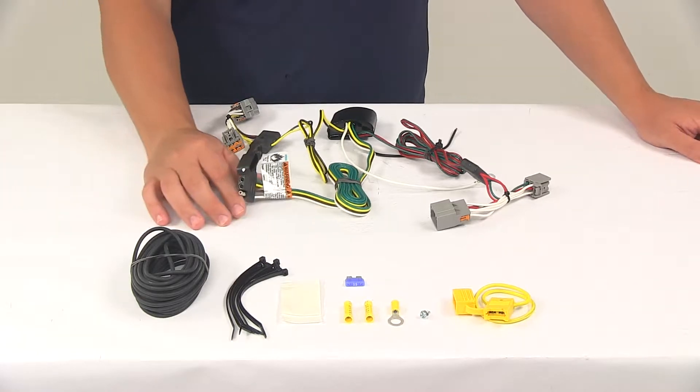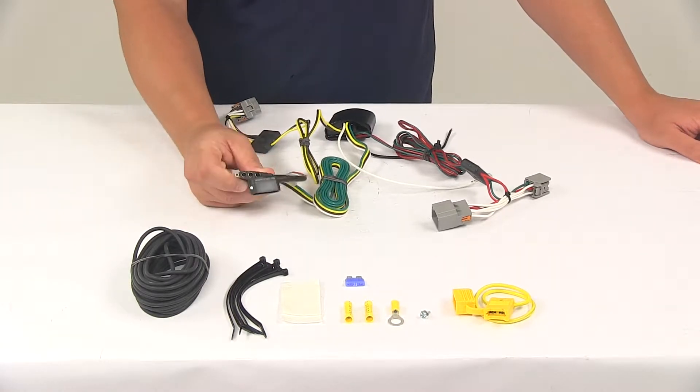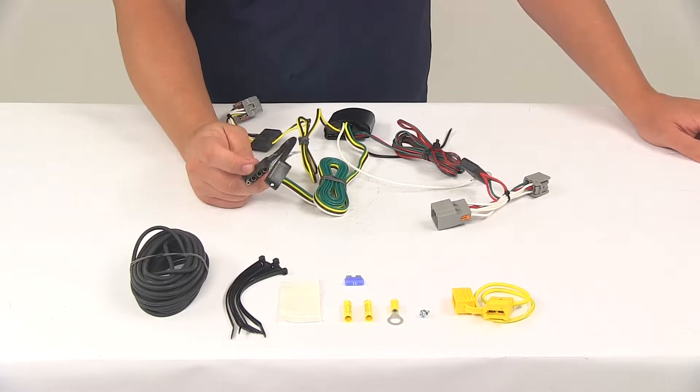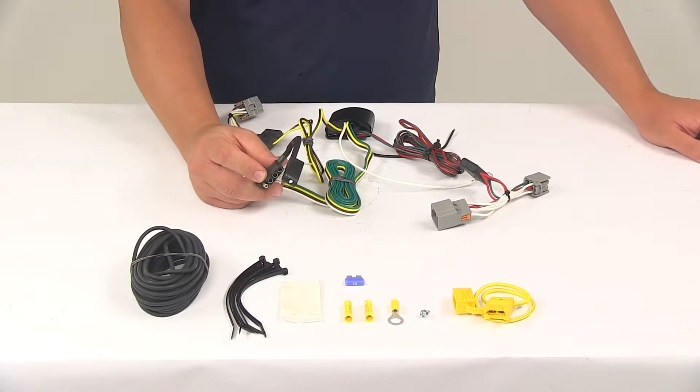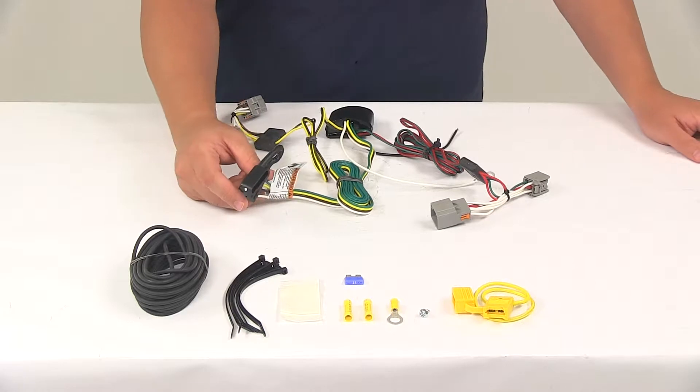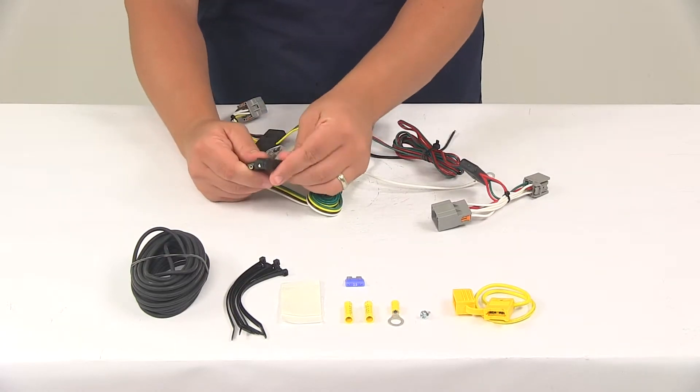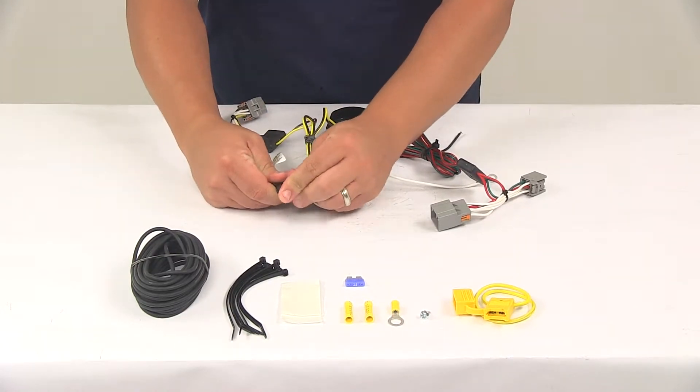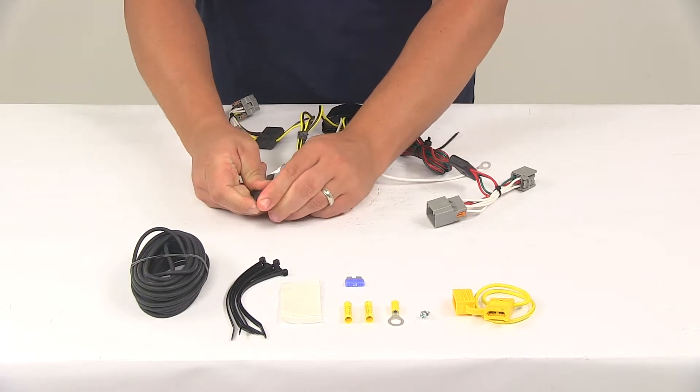It's going to provide a four-way flat trailer connector at the back of your vehicle to power your trailer signal lights. This is compatible with five-pole, six-pole, and seven-pole adapters. Adapters are sold separately, and it comes with a dust cap for the four-way flat connector. That way you can cover up the connection points when the plug's not being used.